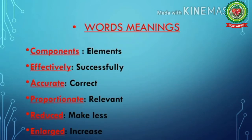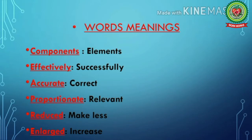Next, we will discuss word meanings related to this topic. 1. Components means elements. 2. Effectively means successfully. 3. Accurate means correct. 4. Proportionate means relevant. 5. Reduced means make less. 6. Enlarged means increase.